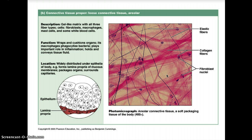From mesenchyme we get connective tissue proper. Loose connective areolar tissue has a gel-like matrix with all three fiber types. Cells are fibroblasts, macrophages, mast cells, and some white blood cells. Its function is to wrap and cushion organs, macrophages phagocytize bacteria — meaning they engulf and digest those bacterial cells — it plays an important role in inflammation, and it holds and conveys tissue fluid. It is widely distributed under the epithelium of the body and forms the lamina propria of mucous membranes, packages organs, and surrounds capillaries. In the micrograph you can see elastic fibers, collagen fibers, and fibroblast nuclei.